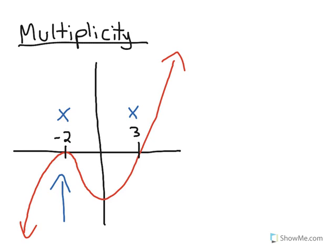That means that if we write the equation of this graph, we don't exactly know what it is, but we can write sort of the general form. We know x plus 2 must be a factor, and we know x minus 3 must be a factor because if you plug these x values in, we'll get 0 for y.